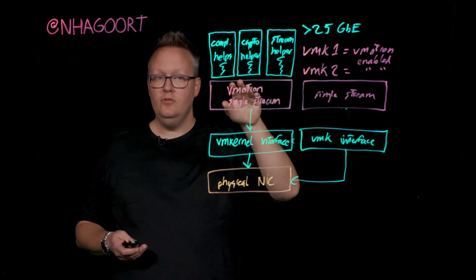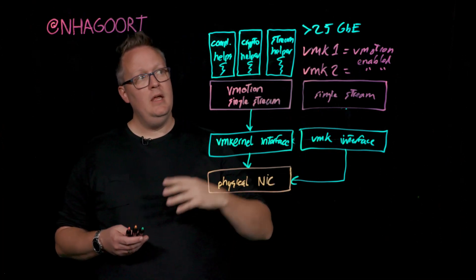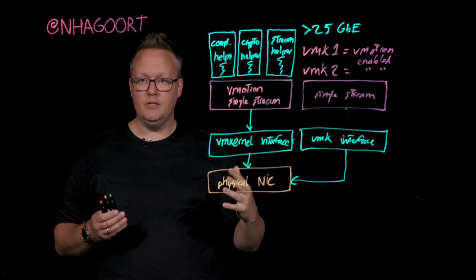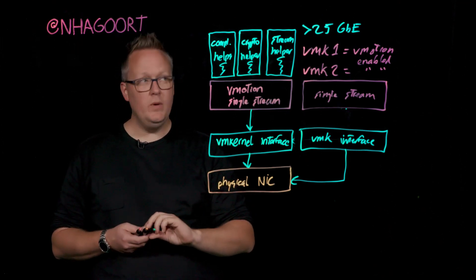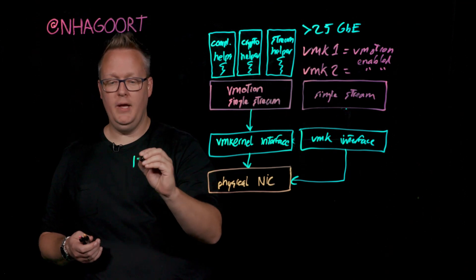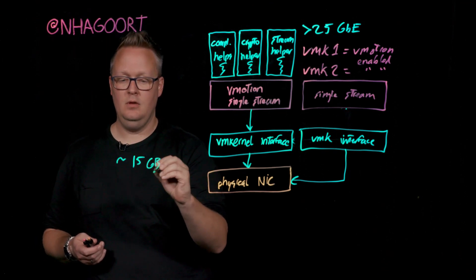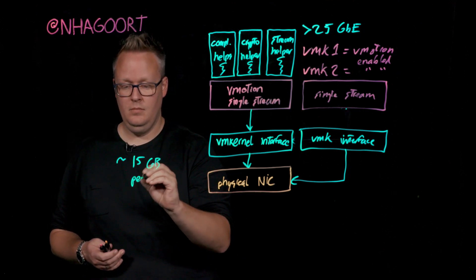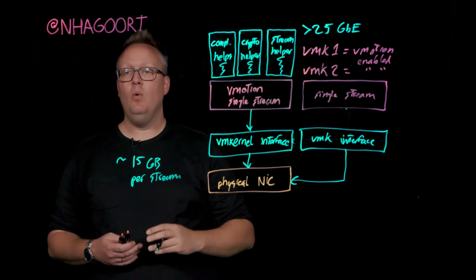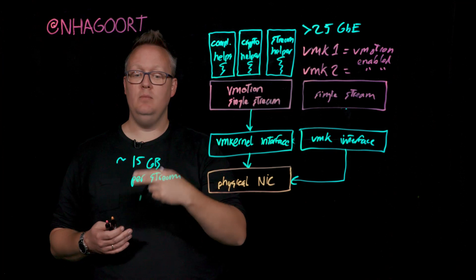What happens is that we have two streams now spun up for the vMotion process. By doing this, we are scaling out the performance of vMotion. Typically, what we see is that one vMotion stream is capable of doing around 15 gig per stream. That means if we want to fully utilize the 25 or 40 gig, we would need multiple streams.